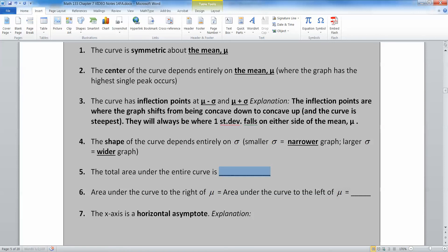The total area under the entire curve, of course, is 1, because this is a probability distribution. If I could spell the word distribution, right? There we go.